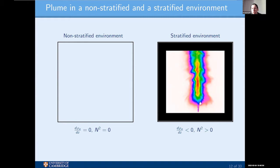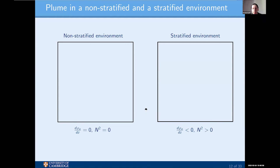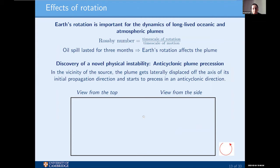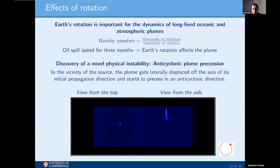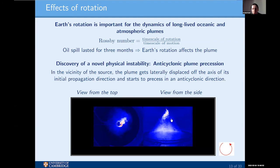The Deepwater Horizon oil plume was released in a rotating environment, so we conjecture that the Earth's rotation may have been important for the plume dynamics, since the oil spill lasted for several rotation periods of the Earth. The effects of rotation are described by the non-dimensional Rossby number, defined as the timescale of rotation to the timescale of motion. We studied the dynamics of the oil plume in a rotating environment and discovered a novel physical instability: in a rotating environment, the plume doesn't keep its vertical axis of propagation. Instead, it is laterally deflected after about one rotation period and starts to precess in an anticyclonic direction.